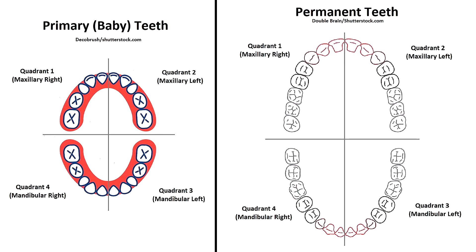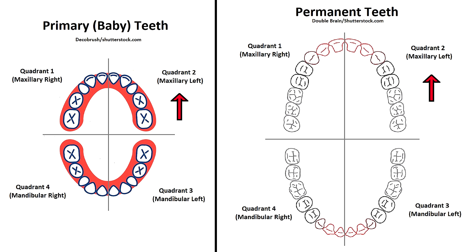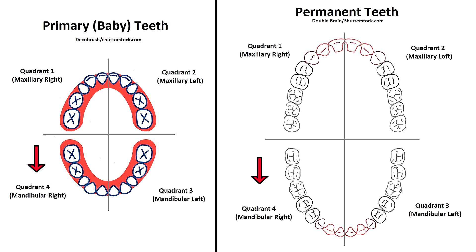The teeth are also divided into four quadrants. The upper right quadrant is number one, and it's also called the maxillary right. The upper left quadrant is quadrant two, and it's called the maxillary left. Quadrant three is in the lower left side, and it's called the mandibular left. And quadrant four is on the lower right side, and it is called the mandibular right.